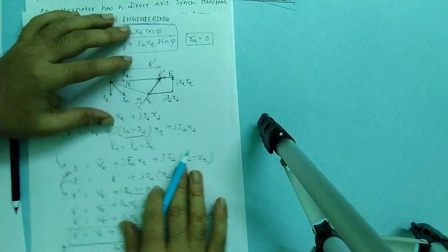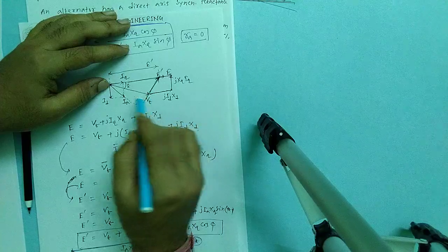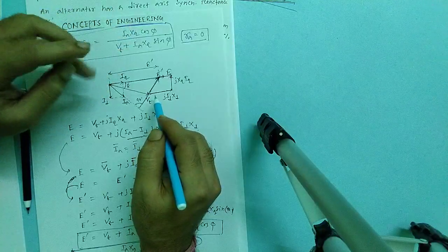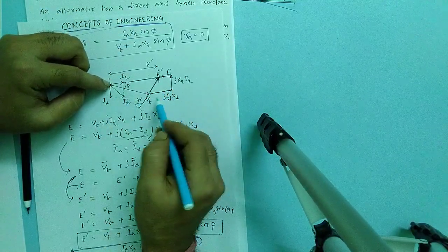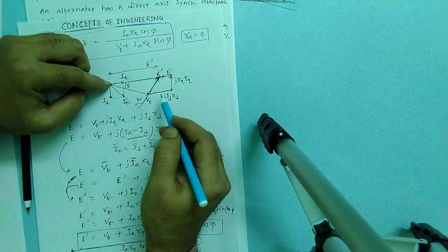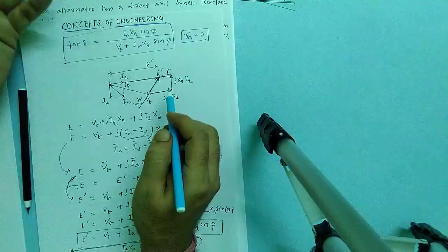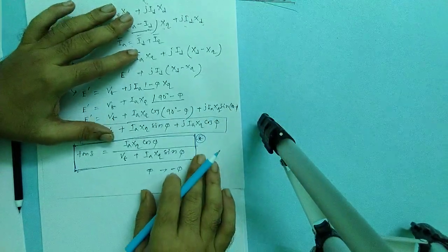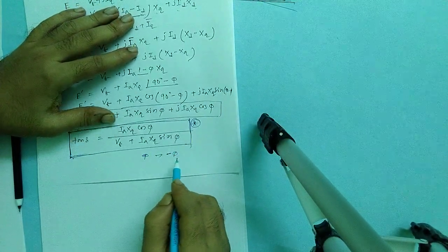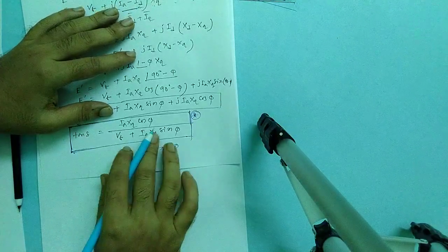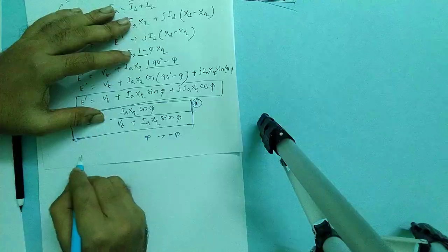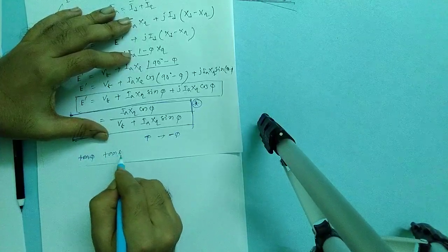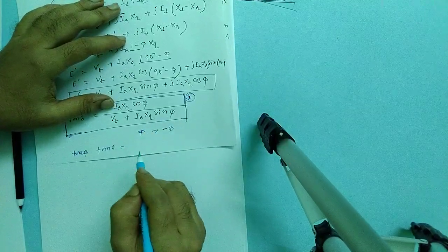Why? For lagging load, current just lags the voltage V_t, but for leading load, load current leads the voltage V_t. That's why phi will be just opposite sign for the leading load. So if you put the value of phi as minus phi, then you will get tan delta will be like that.